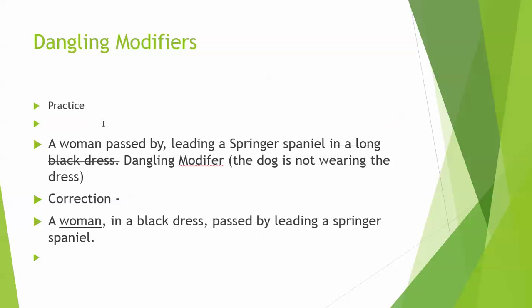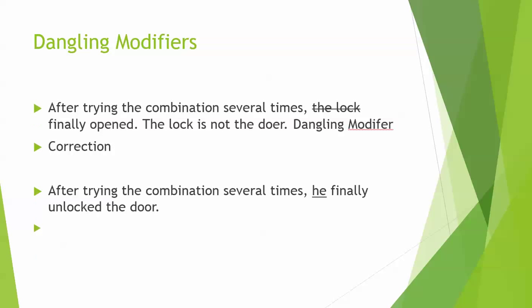Another example: 'A woman passed by leading a Springer Spaniel in a long black dress.' Your English teachers would find this quite humorous, because it sounds like the dog is wearing the dress. But really it's the woman leading the dog. So we have to change the sentence. Here's one way to fix it: 'A woman in the black dress passed by leading a Springer Spaniel.' That makes sense.